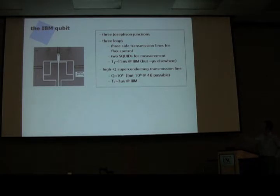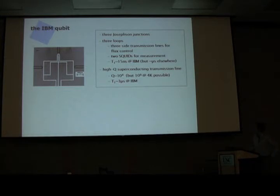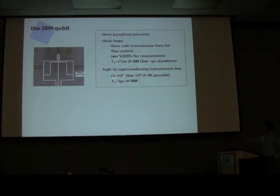For this flux qubit, right now the IBM coherence times are very bad — they are 50 nanoseconds for T1. But other labs, for example the Delft group, have shown that T1 can go up to microseconds. As for the transmission line, the Q is currently 10,000 but can be brought up to 10 million, and they have measured T1 times of three microseconds.